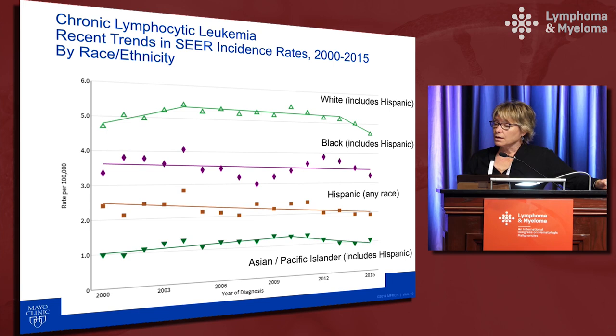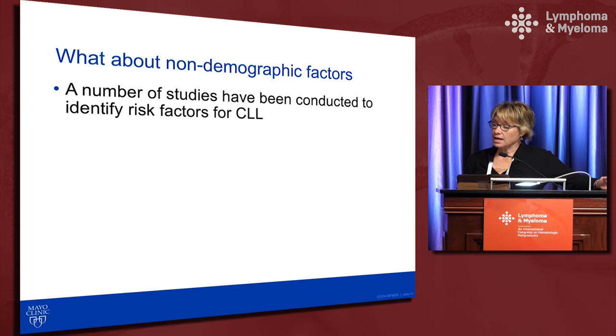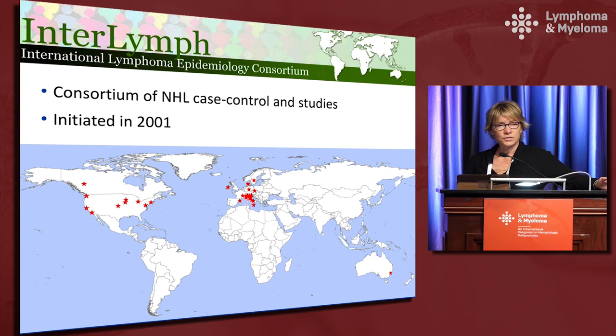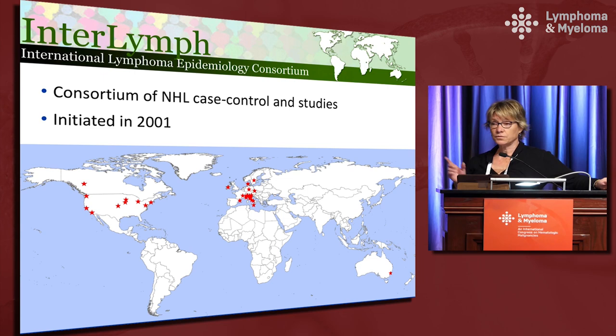Age, sex, and race are non-modifiable demographic factors. A number of studies have been conducted on other risk factors, the largest through the Interlimp Consortium, which pooled non-Hodgkin's lymphoma case-control studies including CLL. Studies were conducted at sites across multiple countries including Australia, and looked at environmental risk factors self-reported by patients across non-Hodgkin's lymphoma subtypes including CLL.